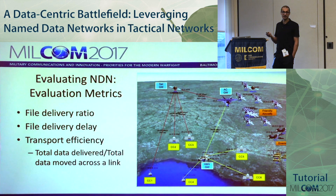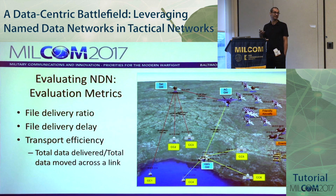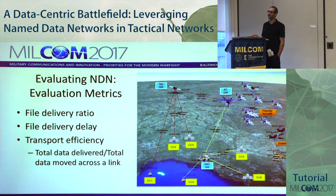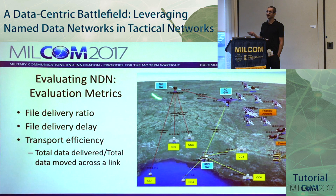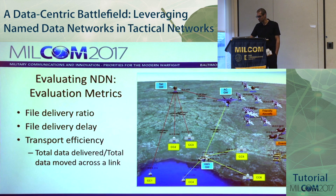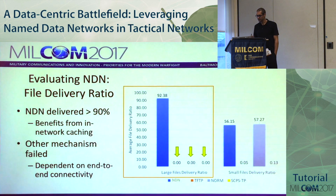Transport efficiency is a key metric: it would be ideal to push less data across disrupted links while delivering more data to end nodes. This highlights the benefits of in-network caching — one request for a file that gets cached upstream means subsequent requests don't have to traverse that link again. They can grab it from a closer cache, which could be a satellite or any intermediate node.